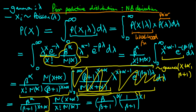We notice that gamma of x plus alpha is the continuous equivalent of the factorial function. If we assume that alpha and x — which is itself a count variable — are integers, then we can write this as just x plus alpha minus 1 all factorial.